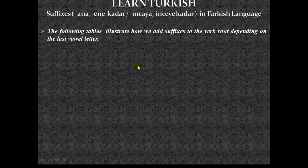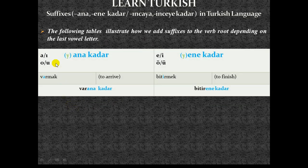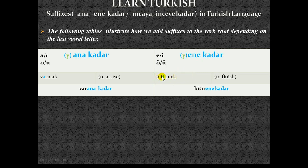The following tables illustrate how we add suffixes to the verb root depending on the last vowel letter. If the last vowel is a, ı, o, or u, we add 'ana kadar.' For example, 'varmak' (to arrive): remove 'mak,' get 'var' with last vowel 'a,' so we add 'ana kadar.' If the last vowel is e, i, ö, or ü, we attach 'ene kadar.' For example, 'bitirmek': last vowel is 'e,' so 'bitirene kadar,' meaning 'until finish.'